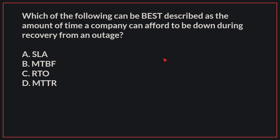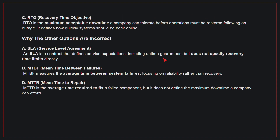Which of the following can best be described as the amount of time a company can afford to be down during recovery from an outage? The correct answer is C, RTO. RTO is the maximum acceptable downtime a company can tolerate before operations must be restored following an outage. It defines how quickly systems should be brought back online.